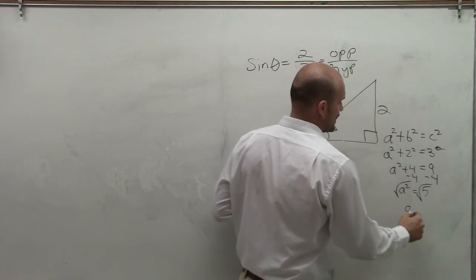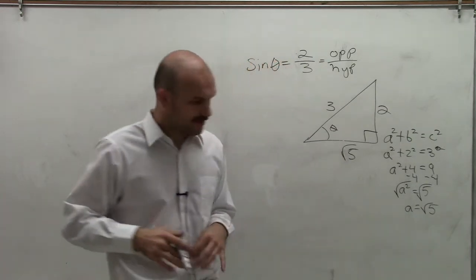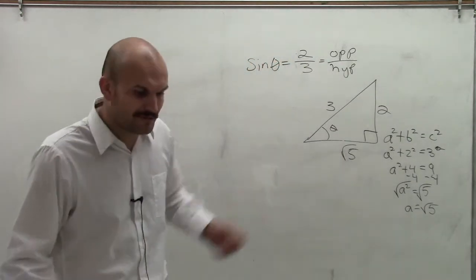Square root both sides. a equals the square root of 5. So therefore, in this triangle, we're going to have the square root of 5.